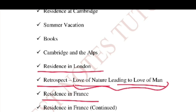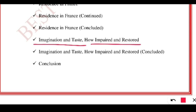Residence in France is also discussed, where he talks about some very important incidents that changed the course of his life. Further chapters continue the story from France. Then we find 'Imagination and Taste, How Impaired and Restored' — because of industrialization, human taste has been impaired as people became money-minded. They have to restore their taste by going back to nature and inculcating behaviors that connect them to it. Finally he concludes the book.